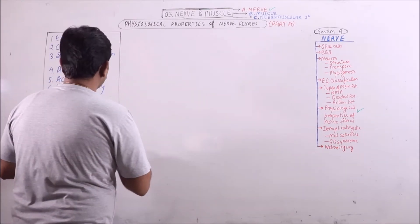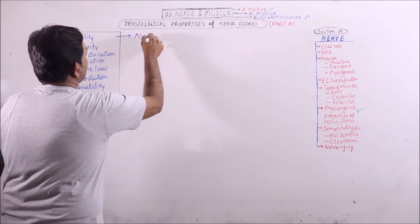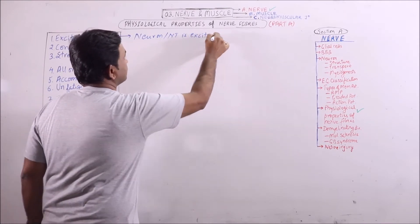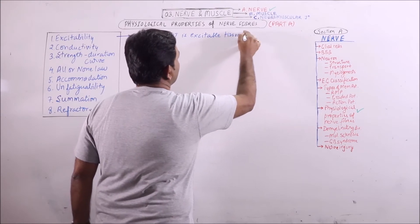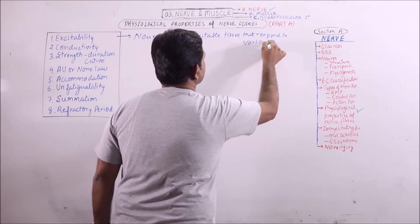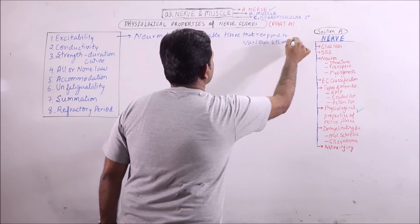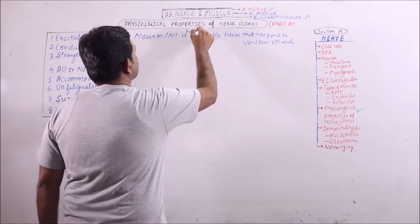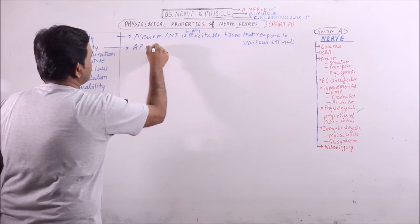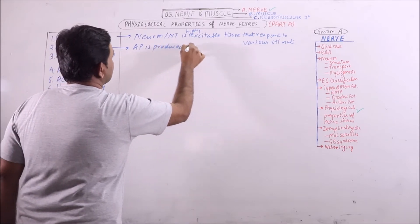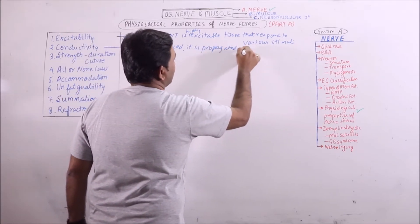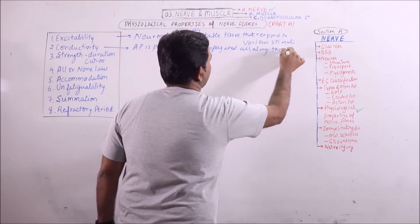First of all, what is excitability? Neuron or neural tissue is highly excitable tissue that responds to various stimuli. Regarding conductivity, if an action potential is produced, it is propagated all along the axon.